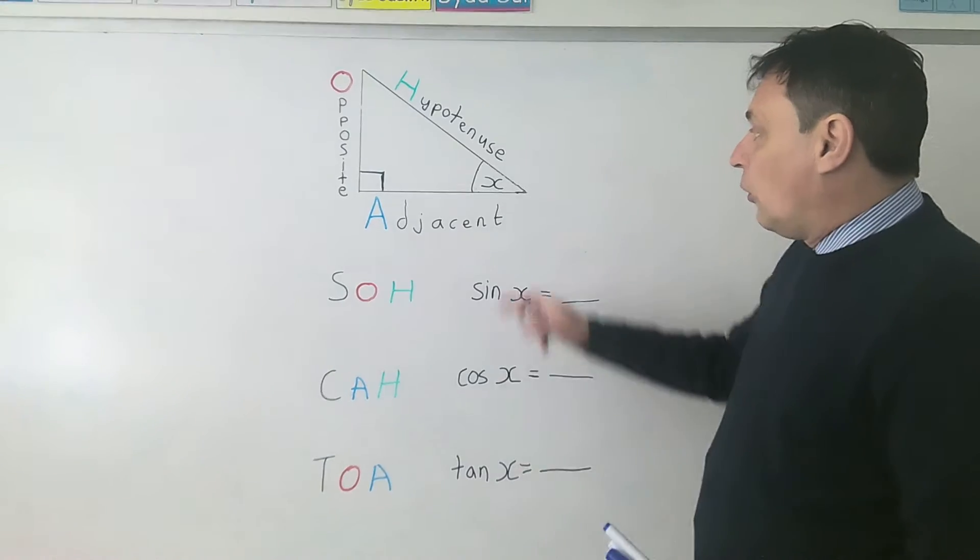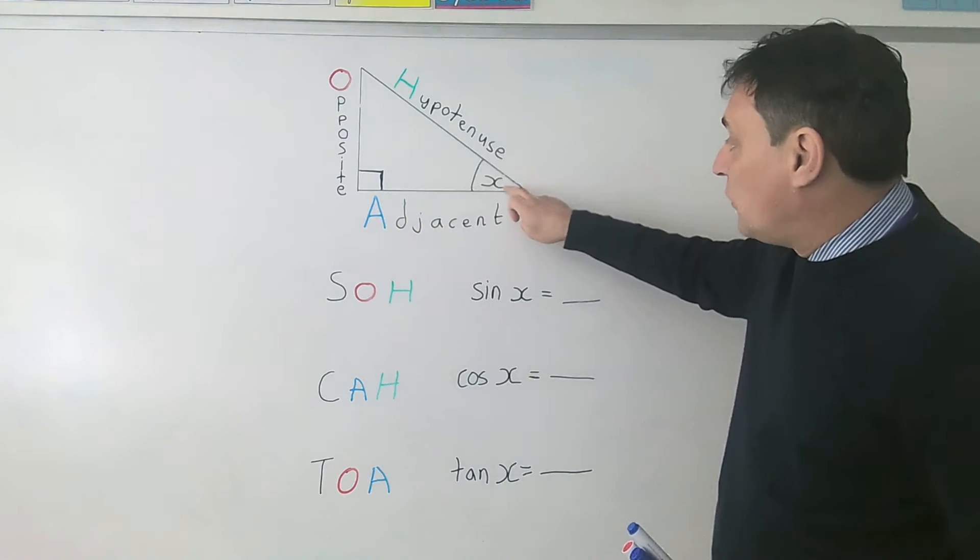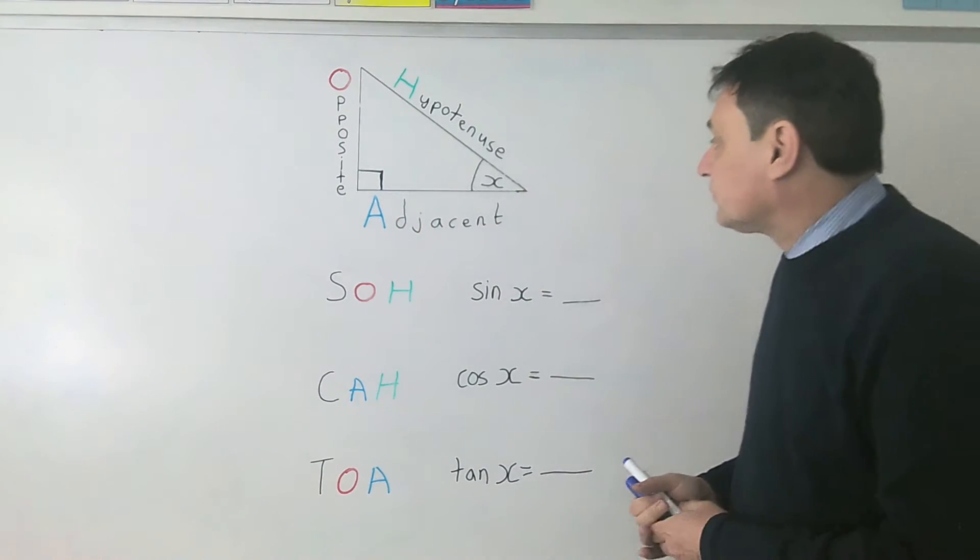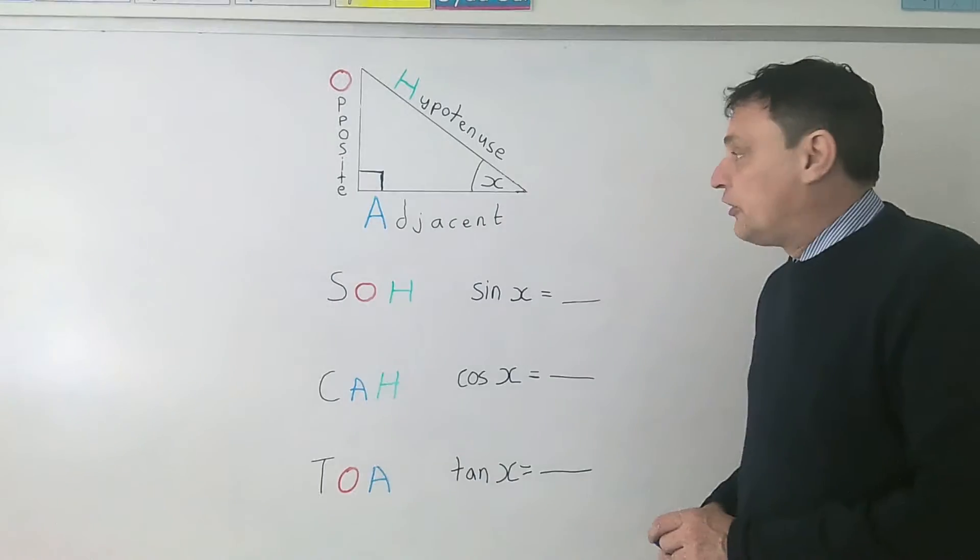Now first of all, let's focus on here we've got a right angle in this triangle and also we've got an angle X. This is going to determine how we label the three sides.